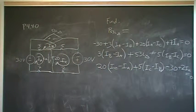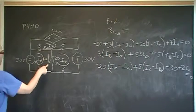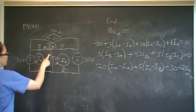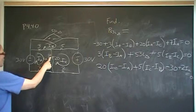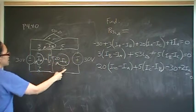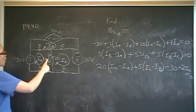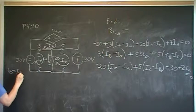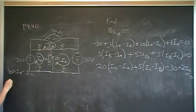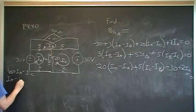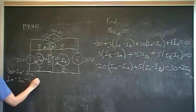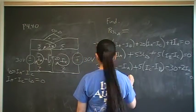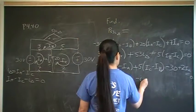We have three equations and four unknowns, so our final equation comes from the definition of I delta itself. Ia is entering the positive terminal of the voltage drop, so we get positive Ia. Ic is entering the negative terminal, so we subtract Ic. Therefore I delta equals Ia minus Ic, which rearranges to Ia minus Ic minus I delta equals zero.